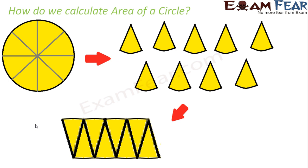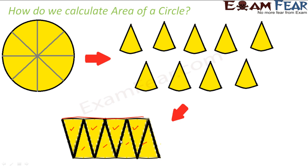Now what you do is arrange these eight pieces to form a parallelogram. You arrange four pieces one way, and the other four pieces in the opposite fashion, so they stack into each other and together form a parallelogram. The area of this parallelogram will be equal to the area of the circle, because both are made up of those same eight sectors — just arranged differently.